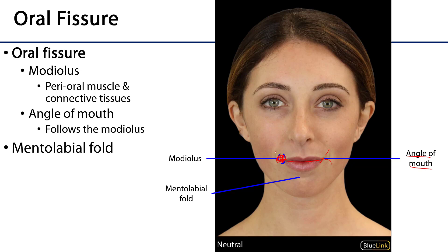Just lateral to and deep to that lateral area is a region called the modiolus. The modiolus is an area of interdigitation of perioral musculature and various connective tissues. You can palpate your own modiolus by placing one finger inside your mouth and the other just lateral to the angle to palpate that modiolus.